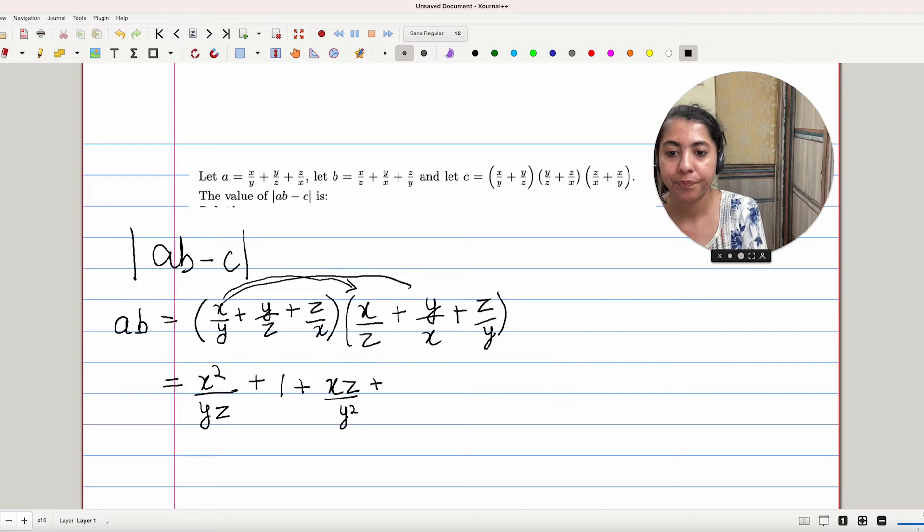Then we have XY/Z² plus Y²/ZX plus 1. Then we have (Z/X) times (X/Z) that will be again 1.